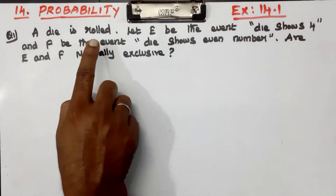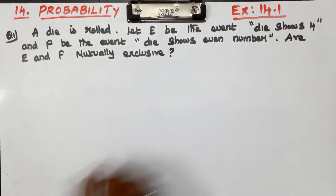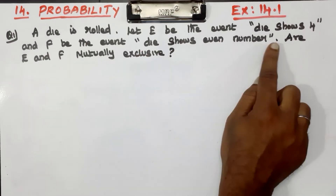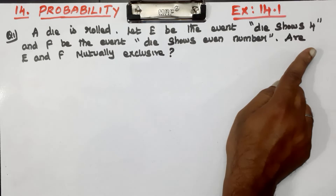A die is rolled. Let E be the event. The event is: die shows 4.